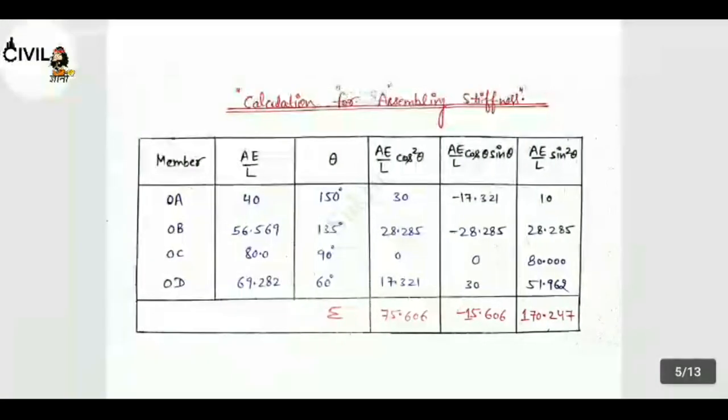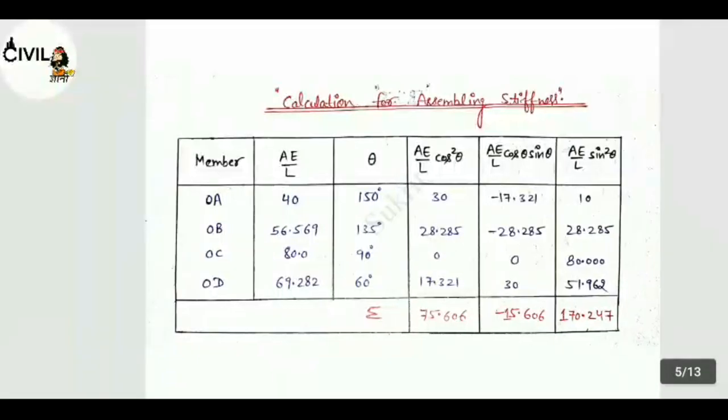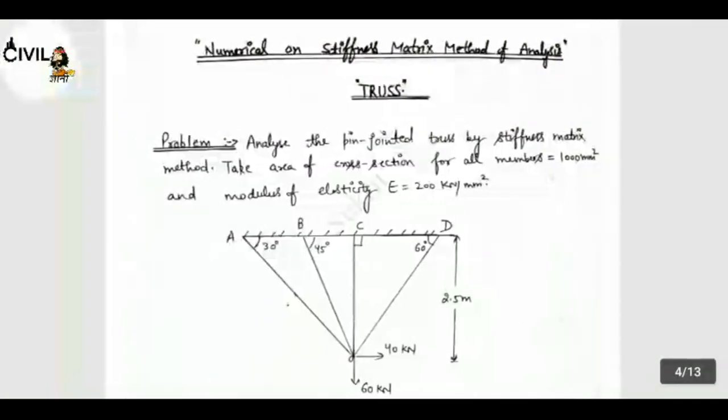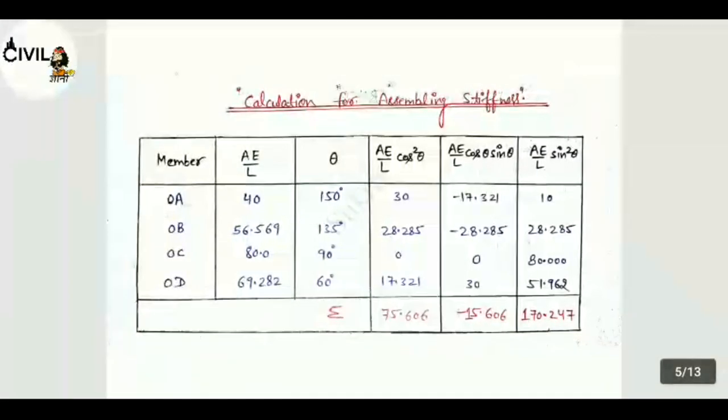Now next step, you have to draw table for the calculation for assembling stiffness. First step is member drawn: member OA, OB, OC and OD. Next step is AE/L, then theta, then AE/L cos theta, and AE/L cos theta, and AE/L sin theta.